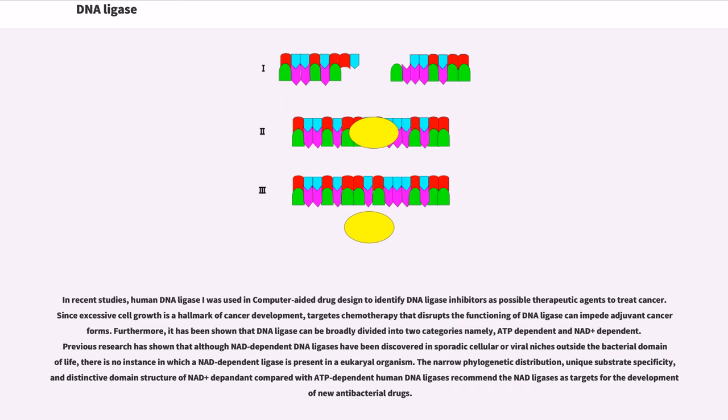Previous research has shown that although NAD-dependent DNA ligases have been discovered in sporadic cellular or viral niches outside the bacterial domain of life, there is no instance in which a NAD-dependent ligase is present in a eukaryotic organism. The narrow phylogenetic distribution, unique substrate specificity, and distinctive domain structure of NAD-plus-dependent compared with ATP-dependent human DNA ligases recommend the NAD ligases as targets for the development of new antibacterial drugs.